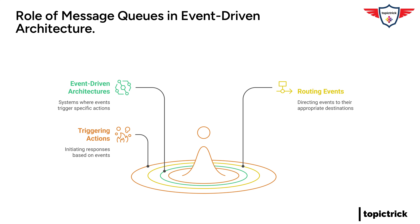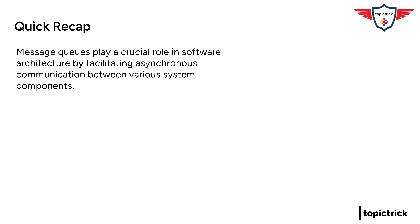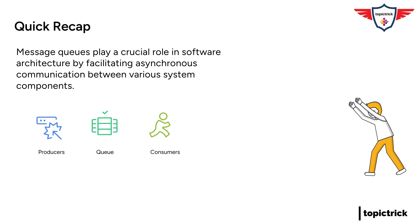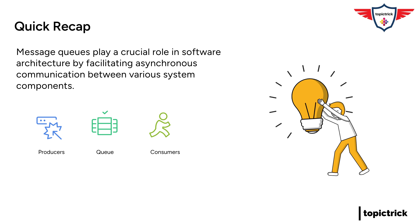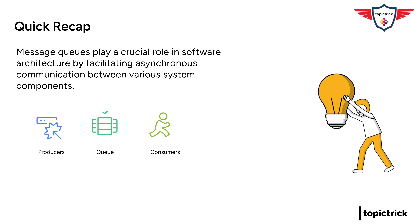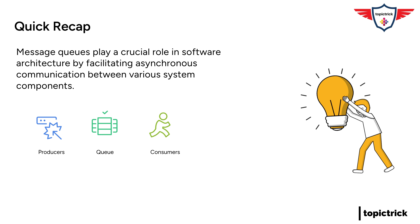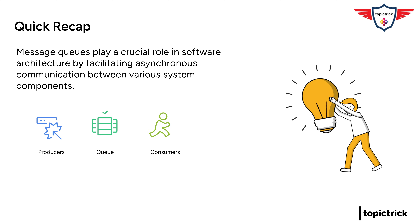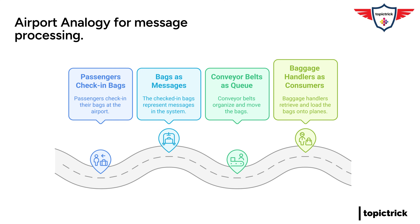Before we move on, let's do a quick recap using our restaurant kitchen analogy. We have our producers — like those awesome chefs — creating messages, which are like those delicious dishes ready to be served. Then we have the queue, like our trusty counter, holding those messages in order until they're ready to be picked up. And then we have our consumers, like our super efficient servers, retrieving and processing those messages and making sure every order is fulfilled. This analogy really captures the magic of message queues: the decoupling, the scalability, the reliability, and the asynchronous processing. That's the beauty of message queues.